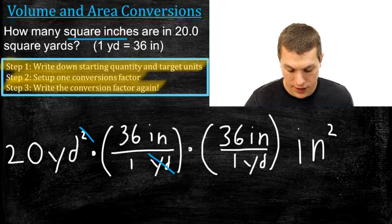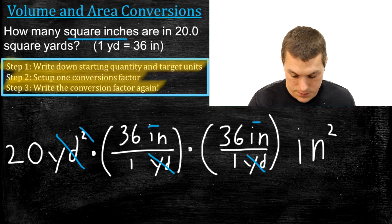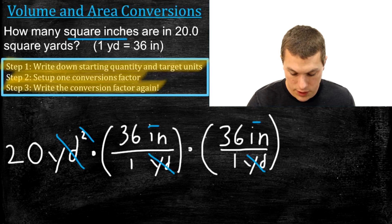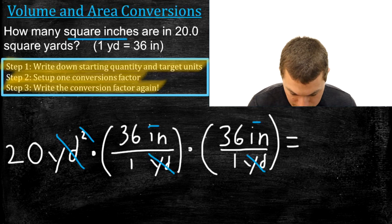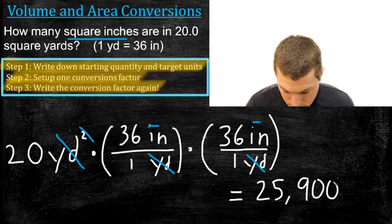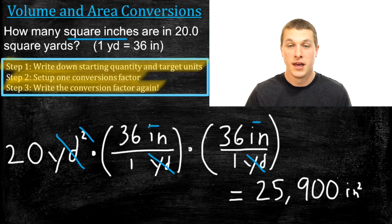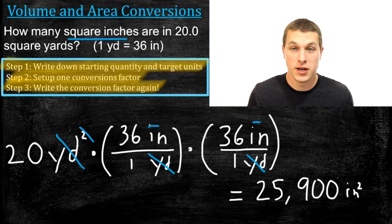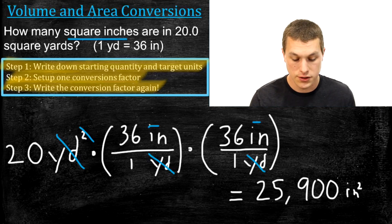Our second conversion factor looks exactly like the first one. We cancel the yard there and the yard there, getting rid of both yards and collecting two inches — or inches squared. The calculation is 20 times 36 times 36, which gives us 25,920 square inches. That's a surprisingly high number, but because we apply that 36 twice, the number gets much much bigger.